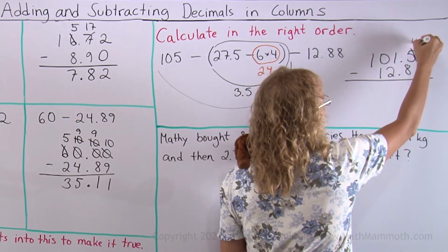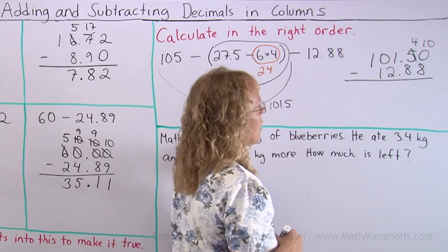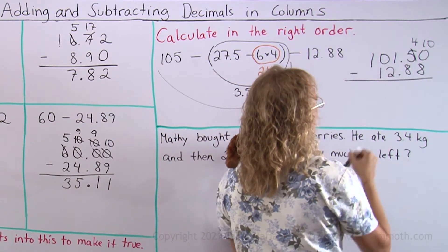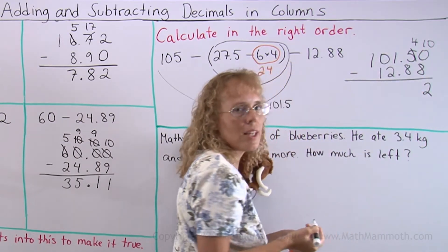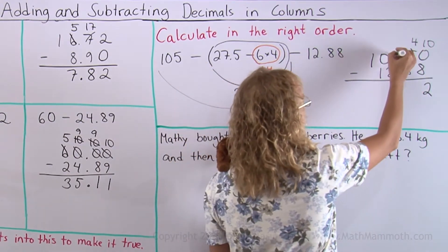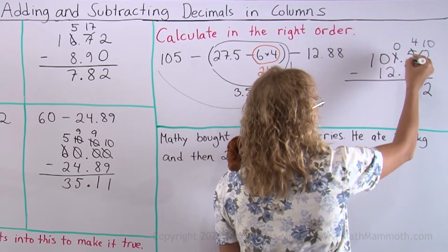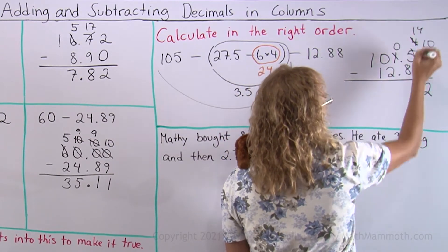So leave 4 here, 10 here, and now subtract 10 minus 8. That's 2. And then over here 4 minus 8, I can't do that, so regroup again. Leave 0 here and 14 here. 14 minus 8 is 6.